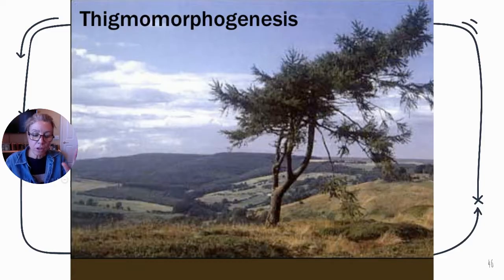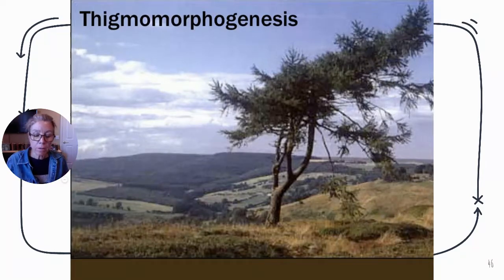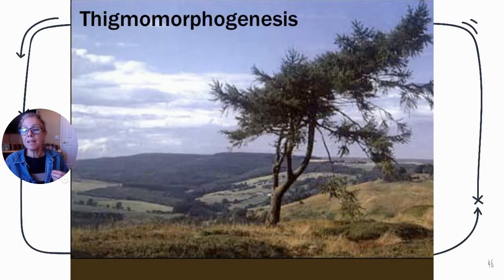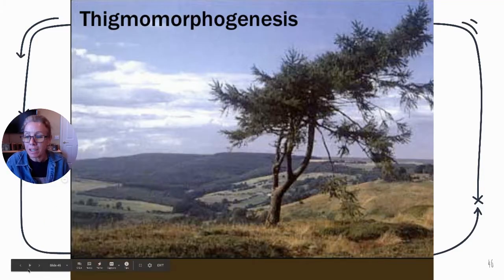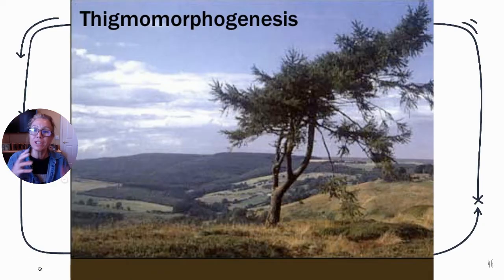Thigmotropism is a response to contact with another object. Cells on the opposite side elongate, and if touched in the dark, they will respond when there is light — because they need ATP in order to have that movement of auxin. The part that's touched stays in place and the part that's not touched elongates and wraps around.